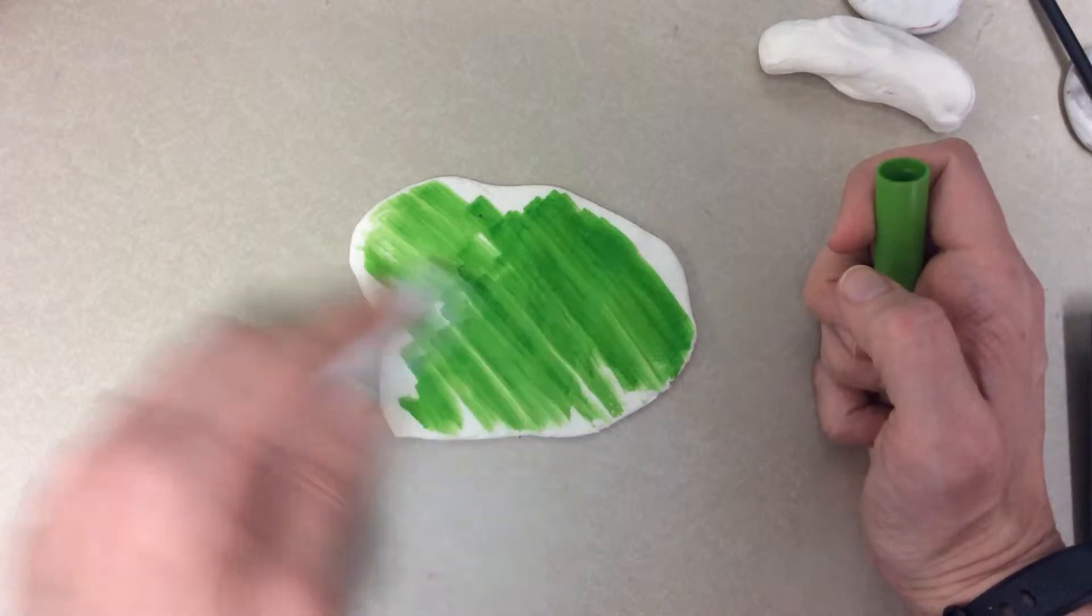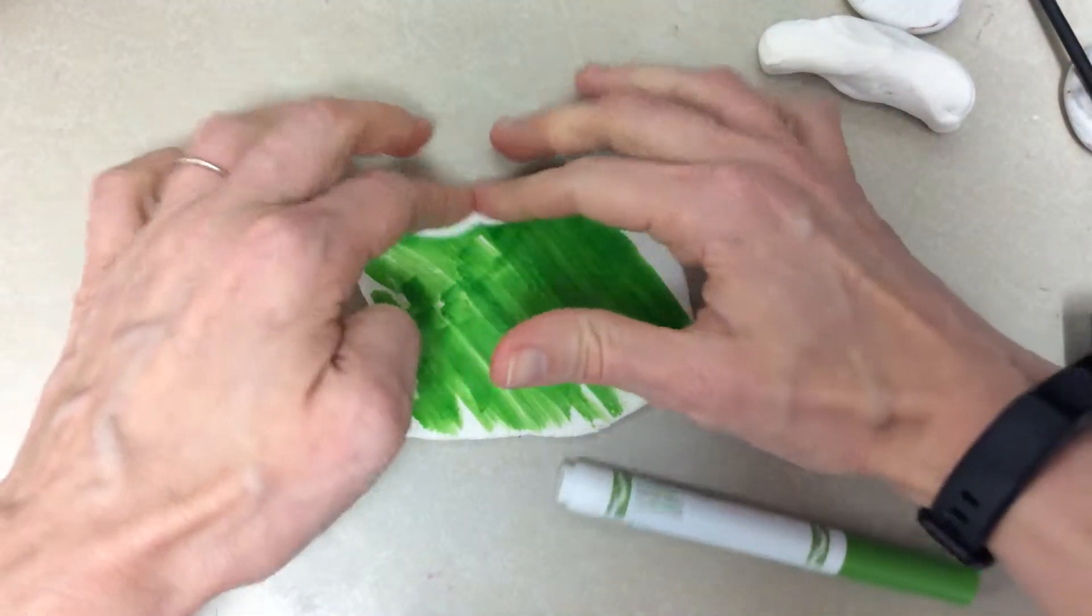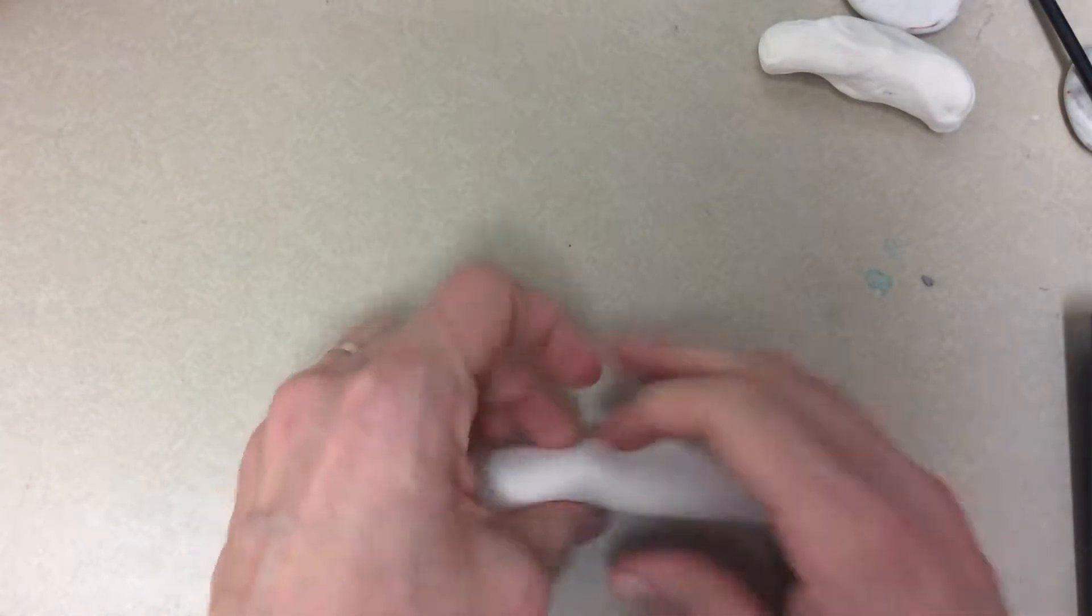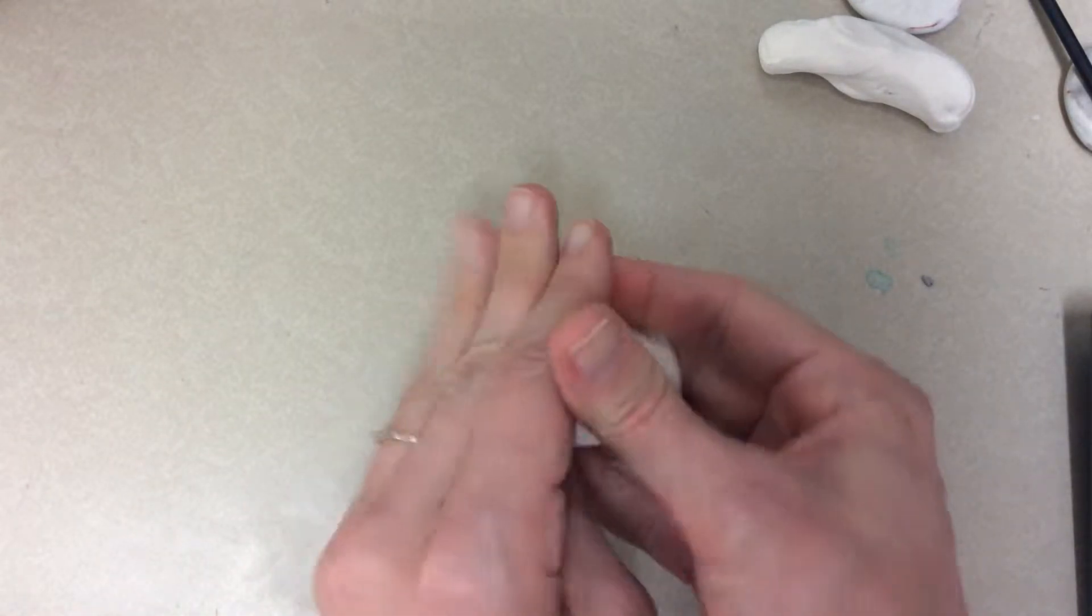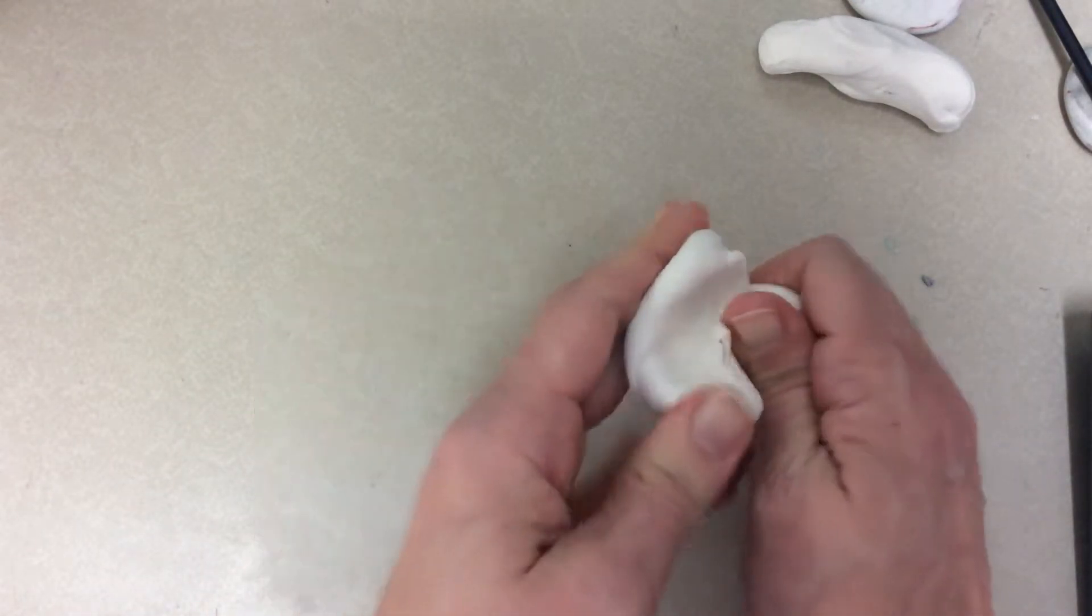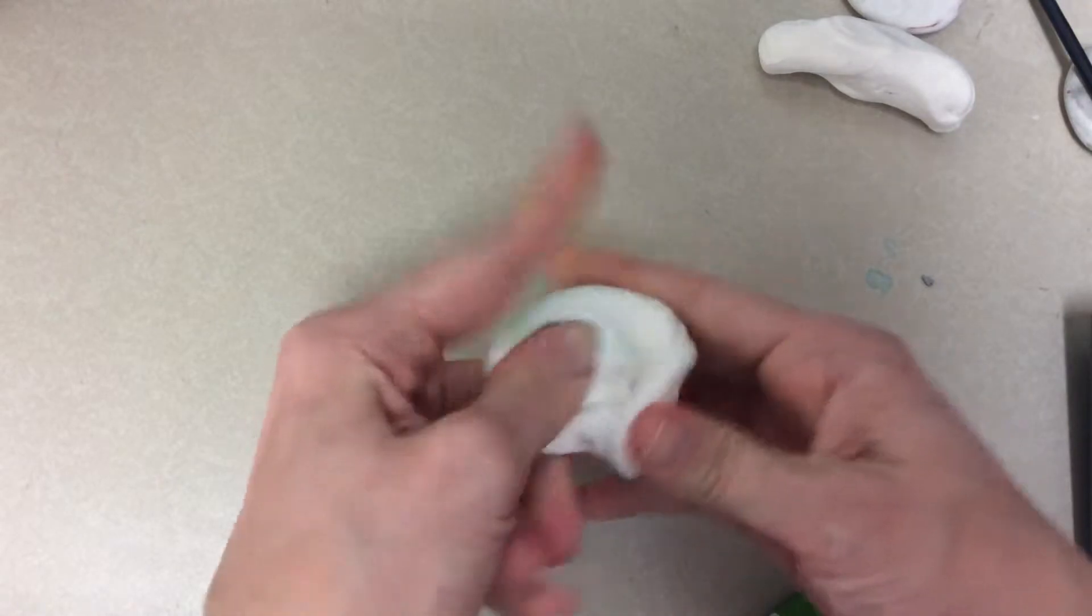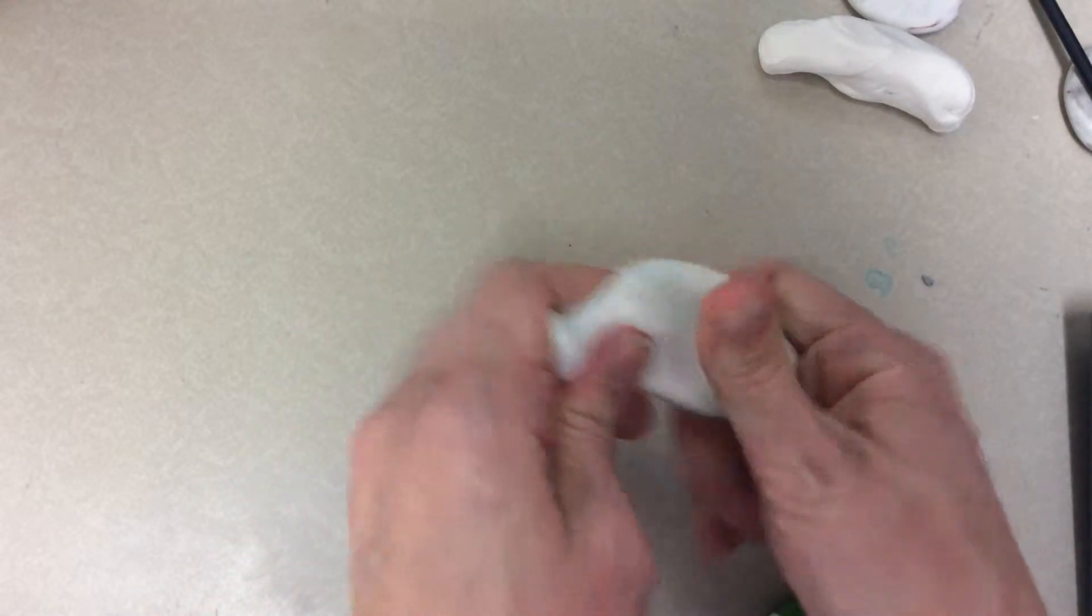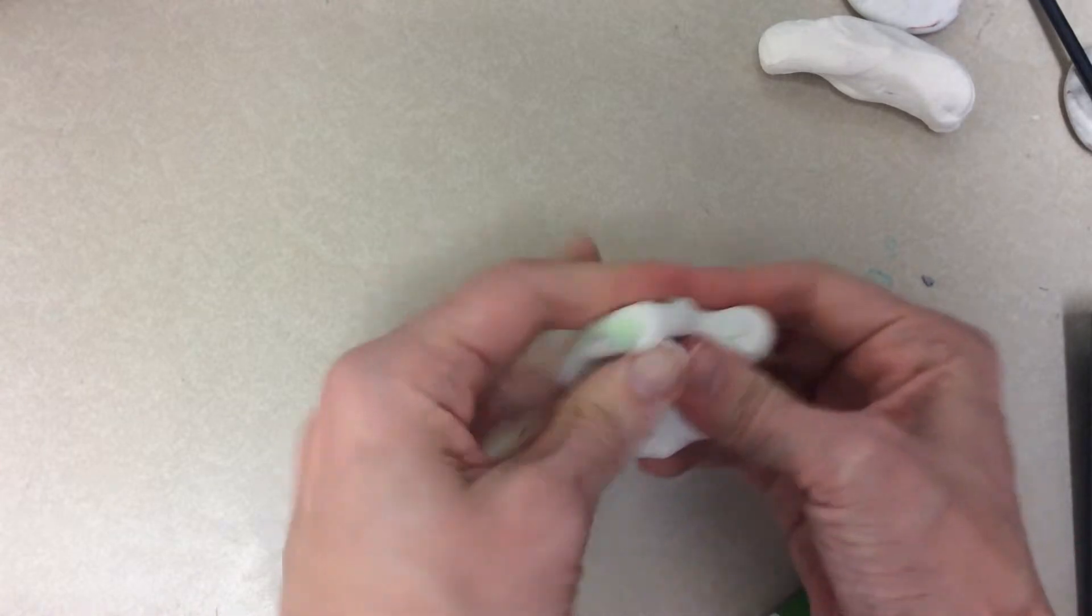Once you have it colored on one side, roll it up so it doesn't touch your hands and you don't want that color all over your fingers. Then mix it up. Some of you may remember this from last year when we made cupcakes. This is very similar.